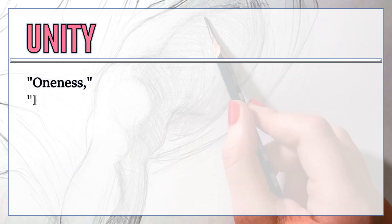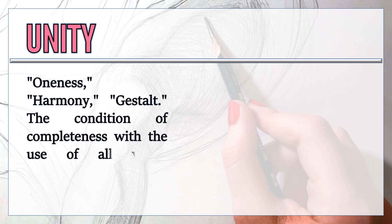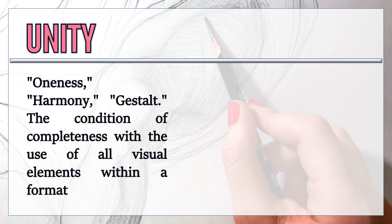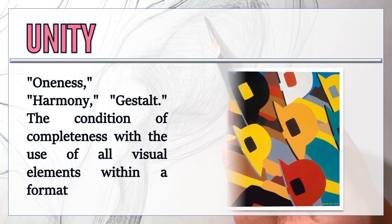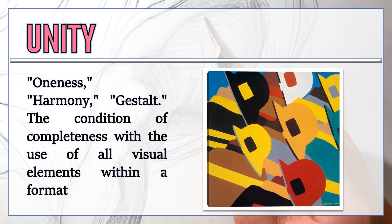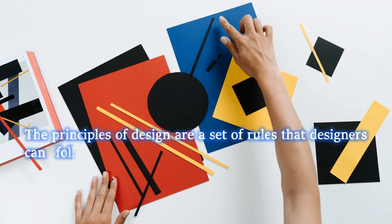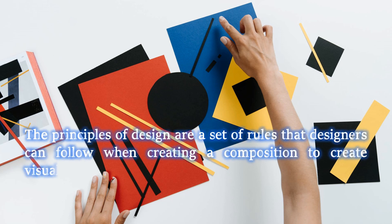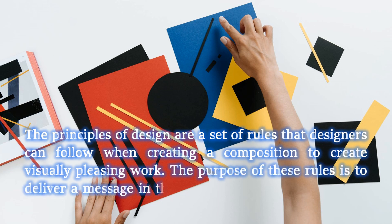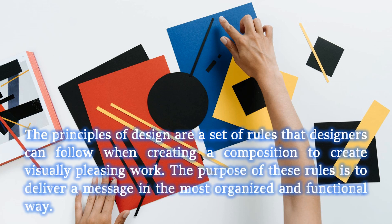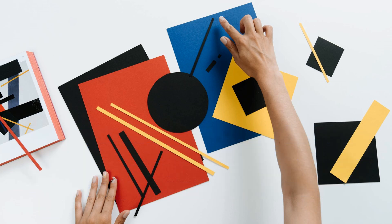The last principle is unity — oneness, harmony, gestalt — the condition of completeness with the use of all visual elements within a format. The principles of design are a set of rules that designers can follow when creating a composition to create visually pleasing work. The purpose of these rules is to deliver a message in the most organized and functional way. To be continued.